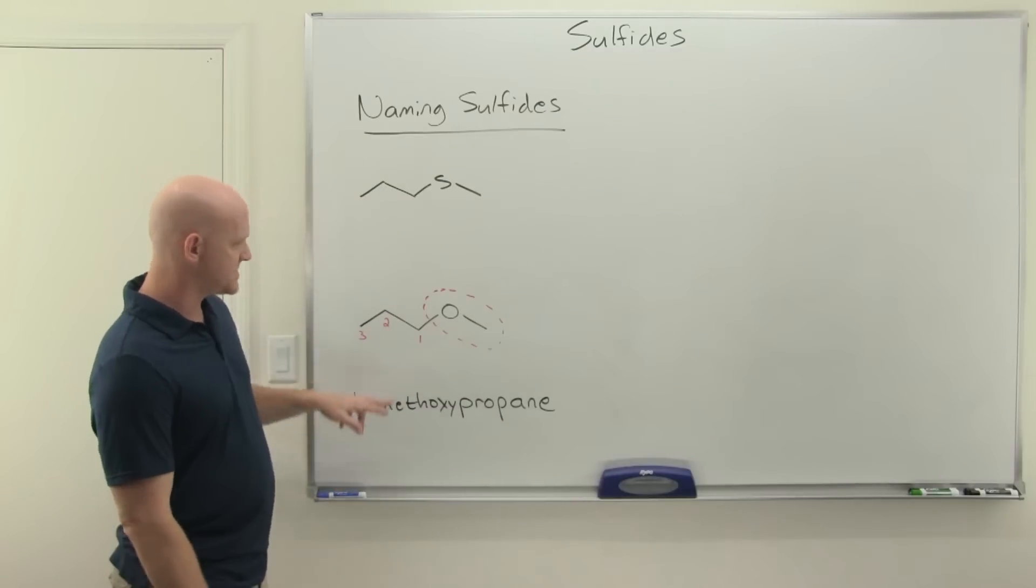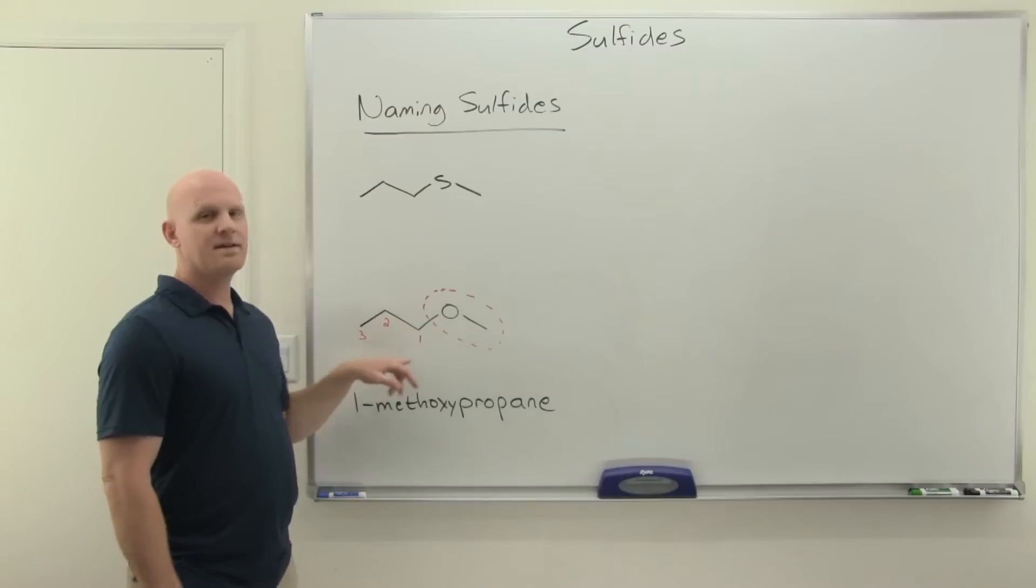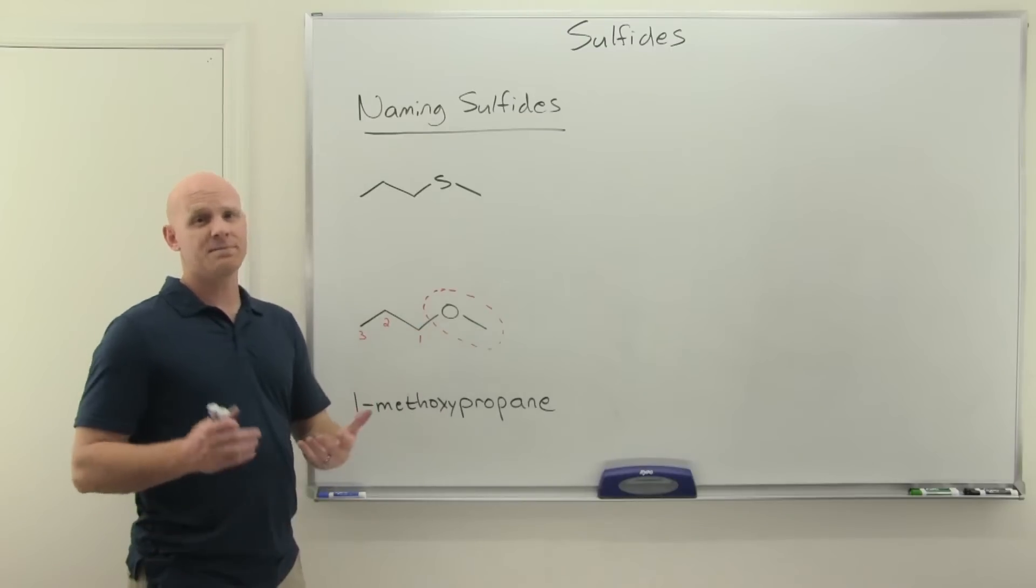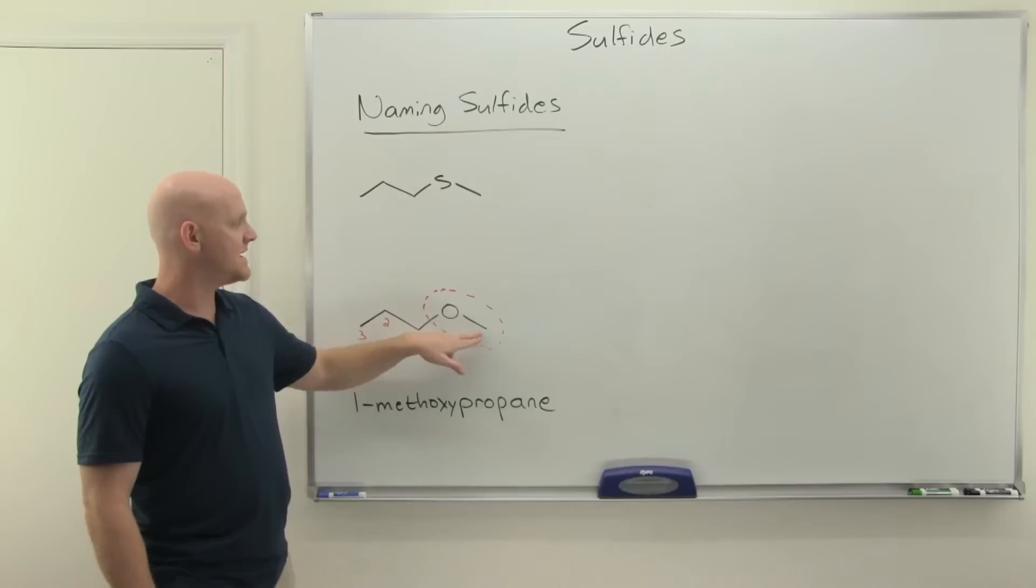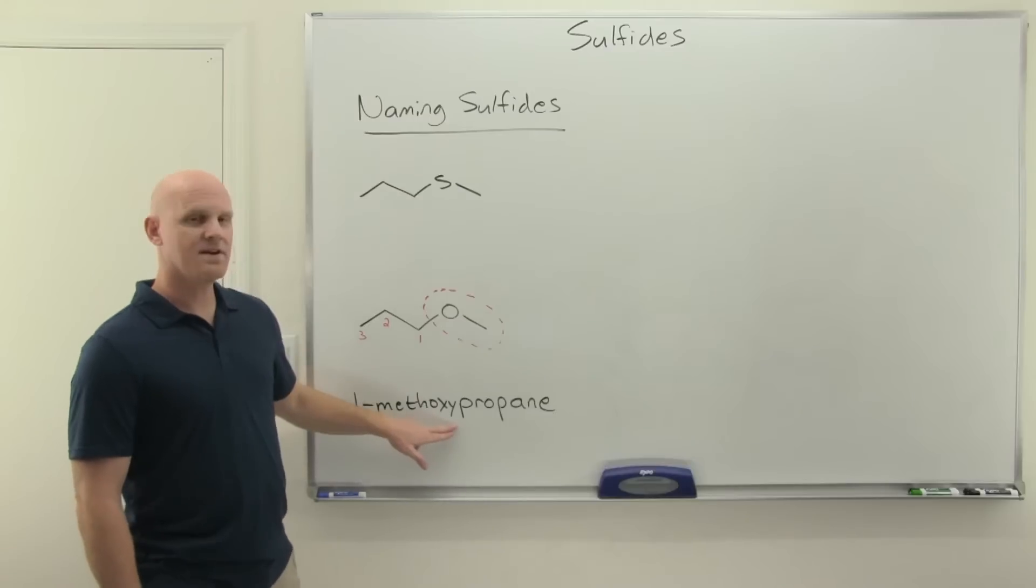A little review on naming an ether here. On an ether, whichever side is longer becomes the parent chain, in this case propane, and you just name the other side as a substituent. You combine the alkyl part and the oxy part to methoxy, as is the case here.